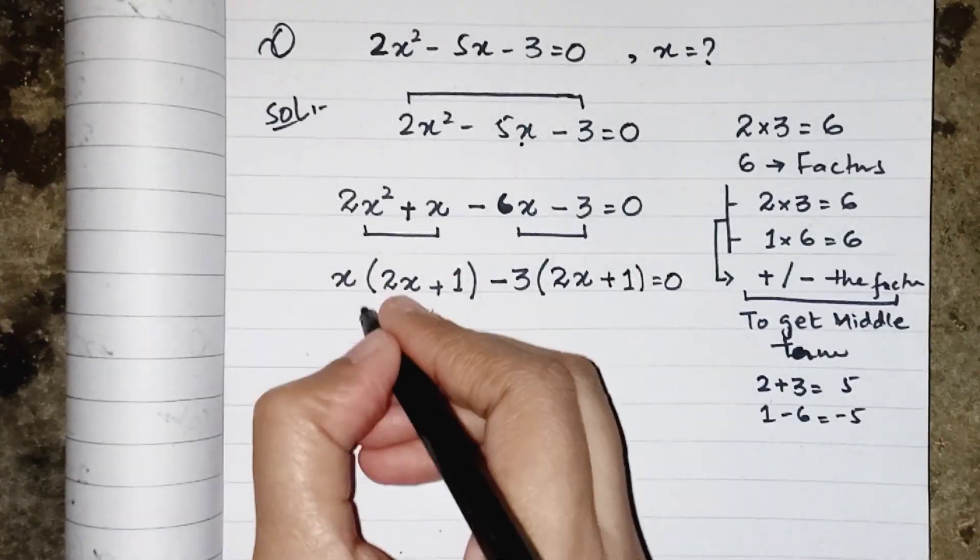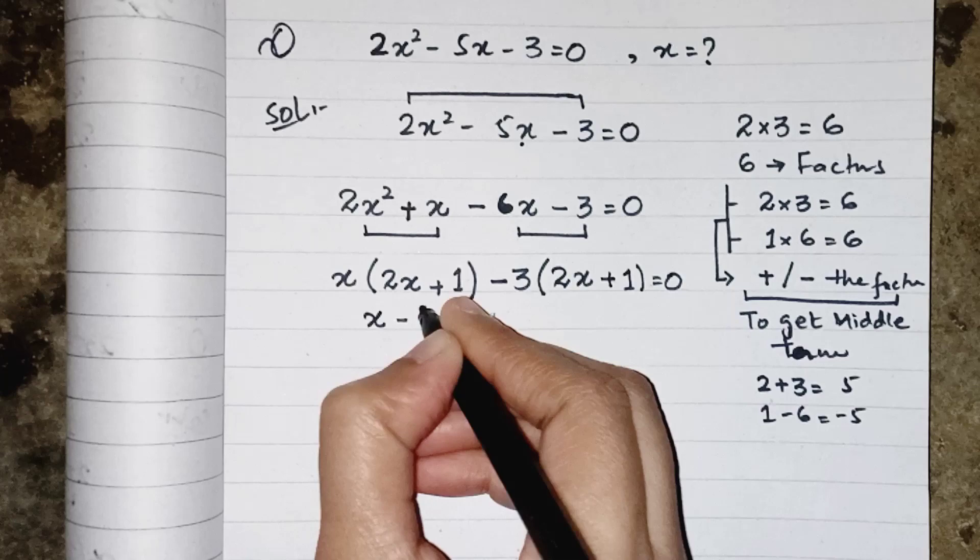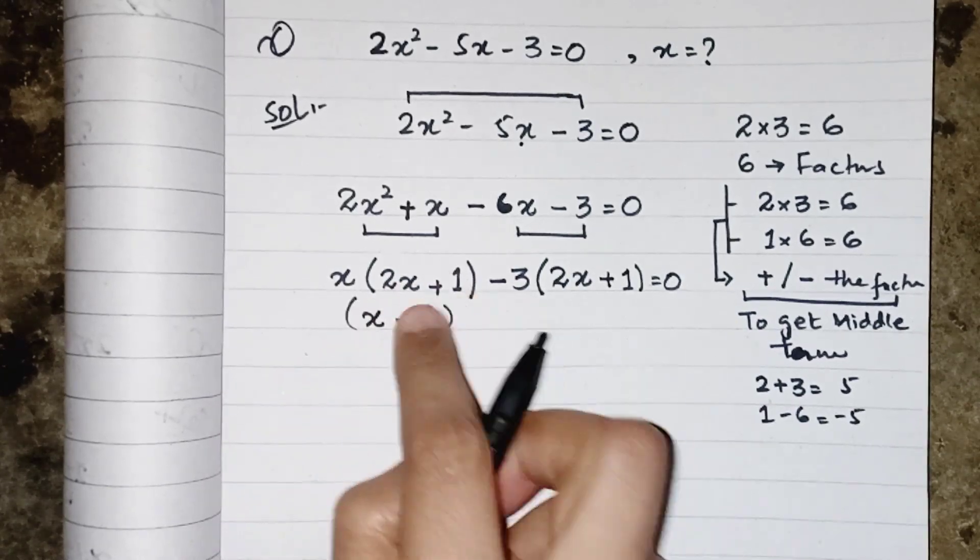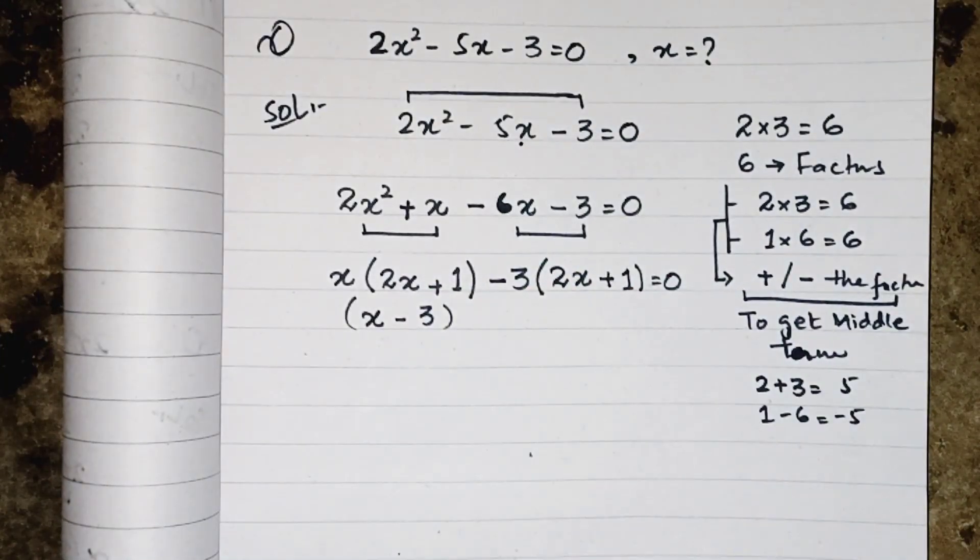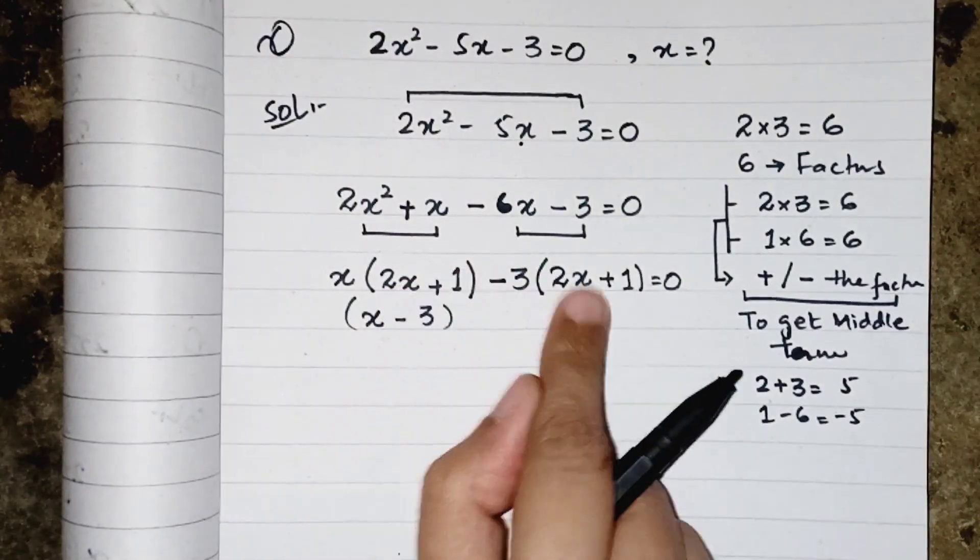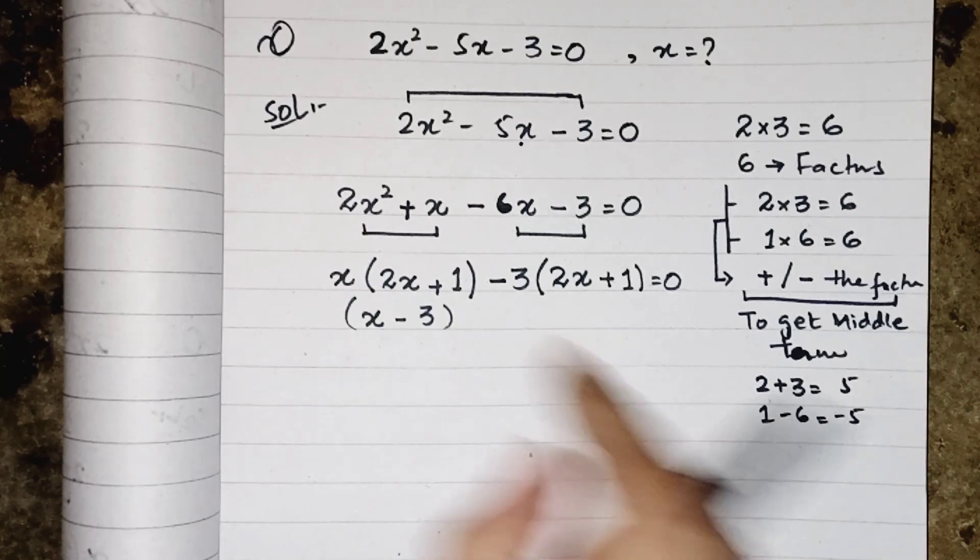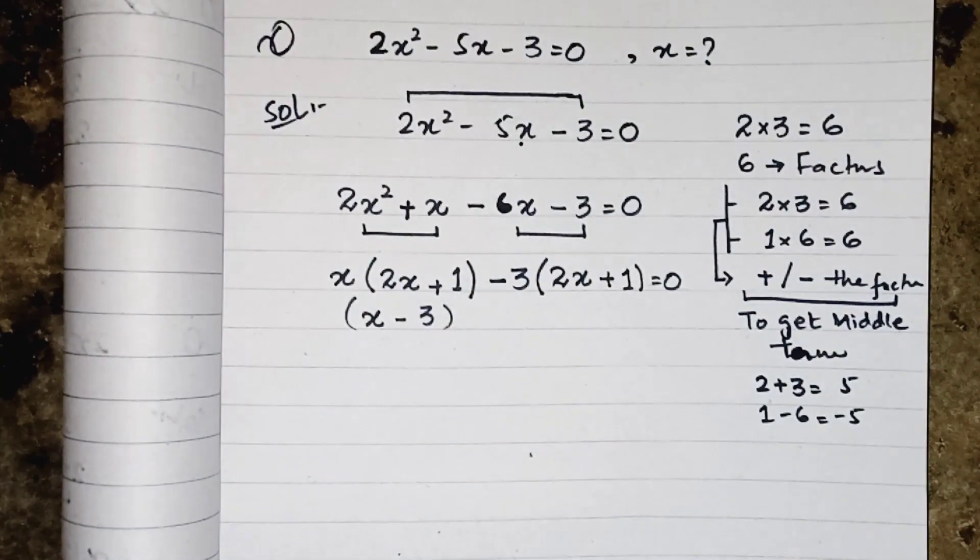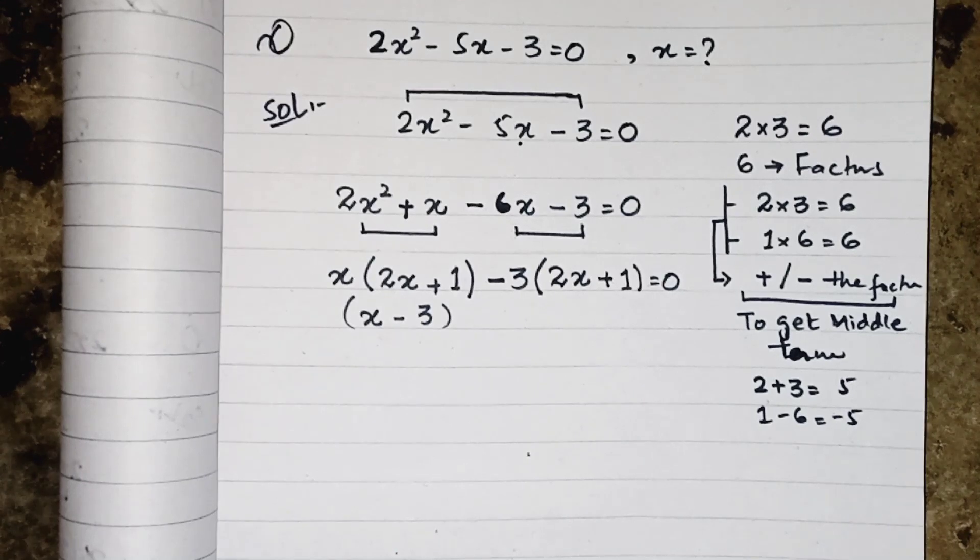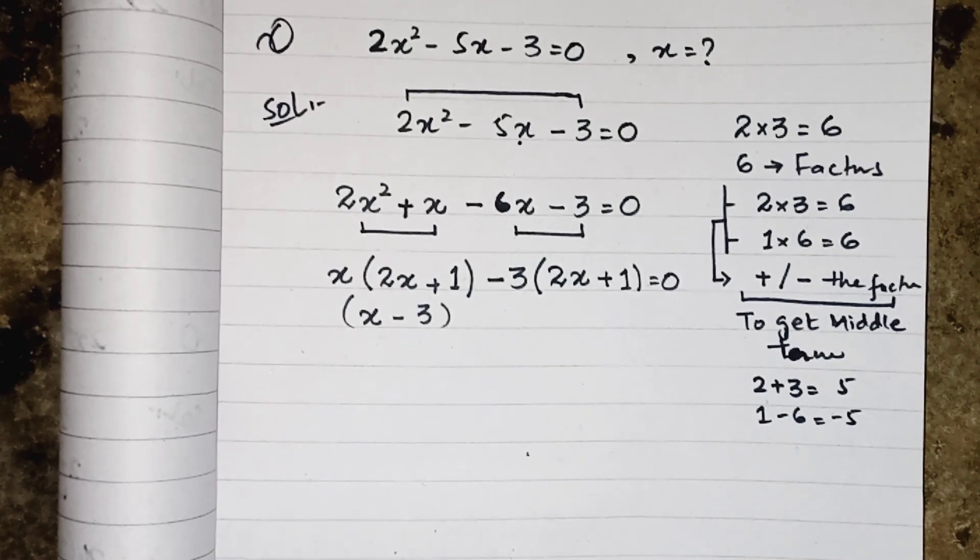Numbers which we take common will write in one bracket. Both brackets are same, that should be must, both brackets should be same. Each variable, their powers, their coefficient, and their signs, each and everything inside the bracket will be exactly same, or else you were taking the wrong common, or you are doing some mistake in taking the factors or applying the sign.